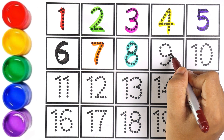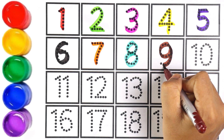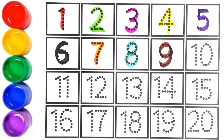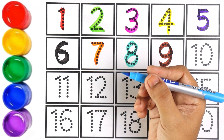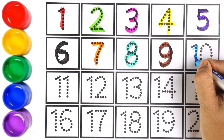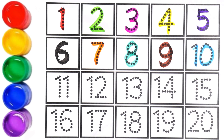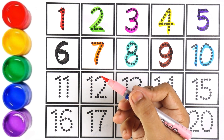I'm using brown color for number nine. Let's move on to the next number, which is number ten. I'm using sky blue color for number ten. One and zero makes the number ten.